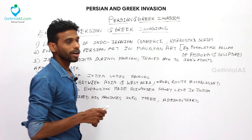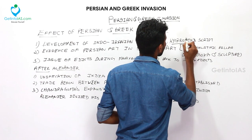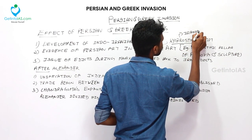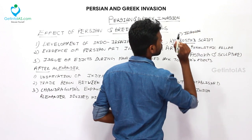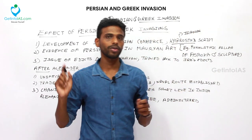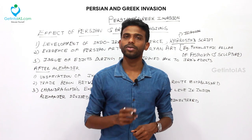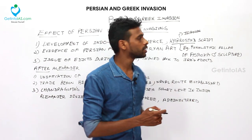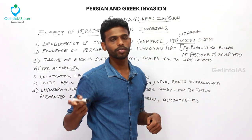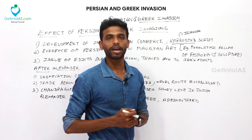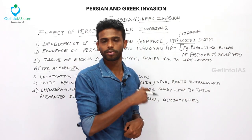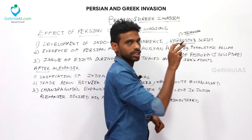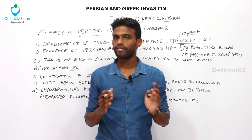The Kharosthi script — an Iranian script — became popular after the invasion of the Persians and was adopted during the Ashokan period. Ashoka used it in inscriptions in the northwestern region, alongside the Brahmi script. The Kharosthi script was thus taken from the Iranian or Persian influence.